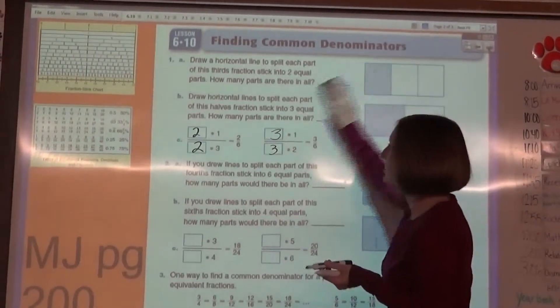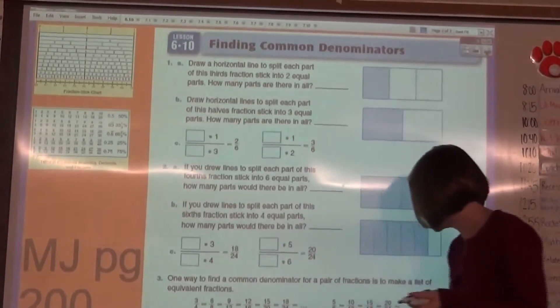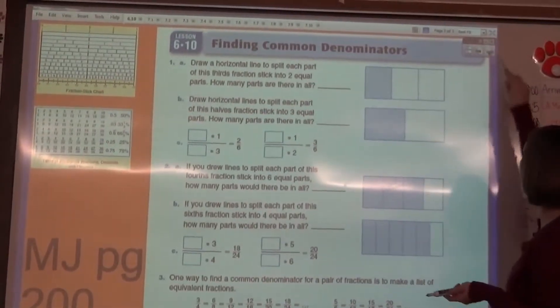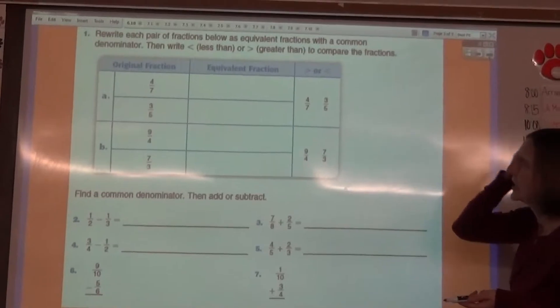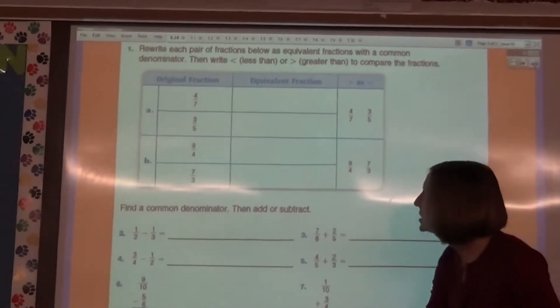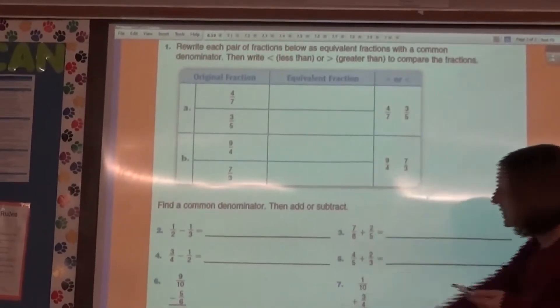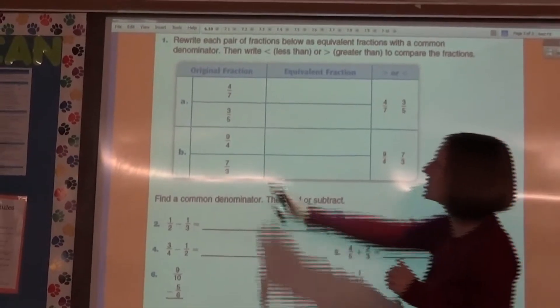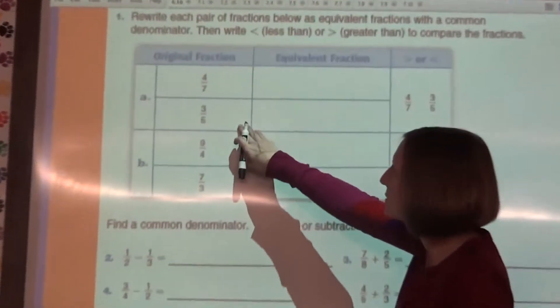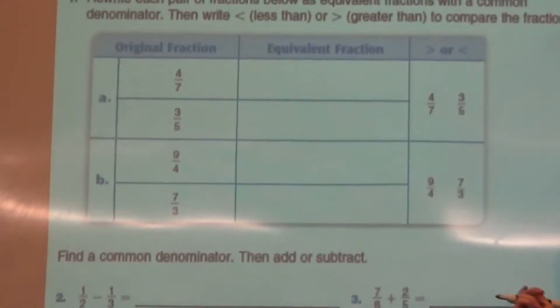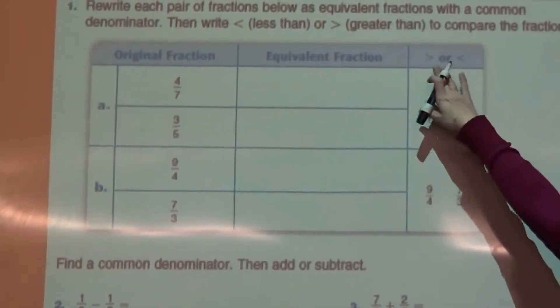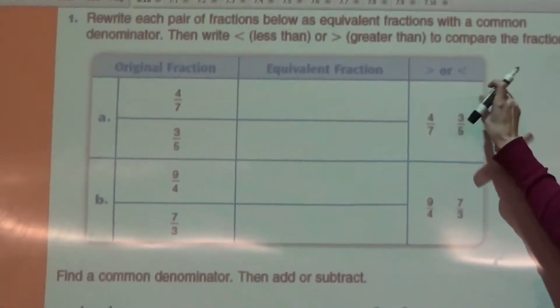You will also need to find equivalent fractions or common denominators to compare fractions and to add and subtract. So on this next page, on page 201, you'll be looking at two fractions, four sevenths and three fifths for letter A, and you need to find common denominators so that you can compare and show which one is greater or less.